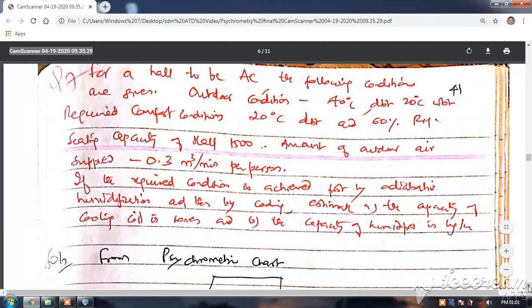If the required condition is first achieved by adiabatic humidification and then by cooling, estimate the capacity of cooling coil in tons and the capacity of the humidifier. So what we will do now: first condition is 40 degrees centigrade and 20 degrees centigrade WBT.